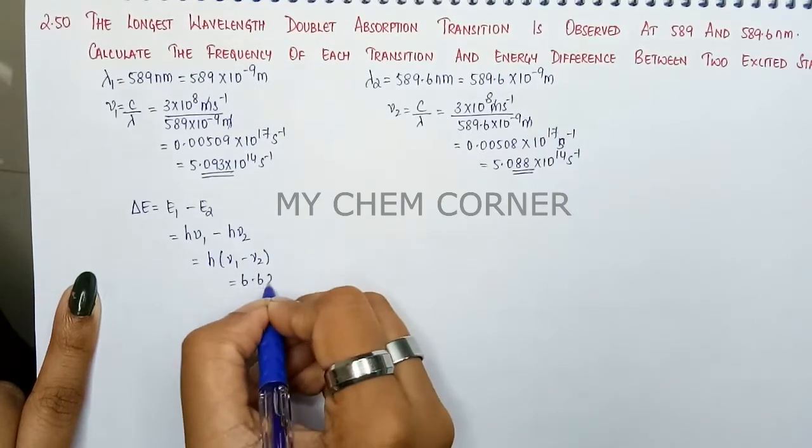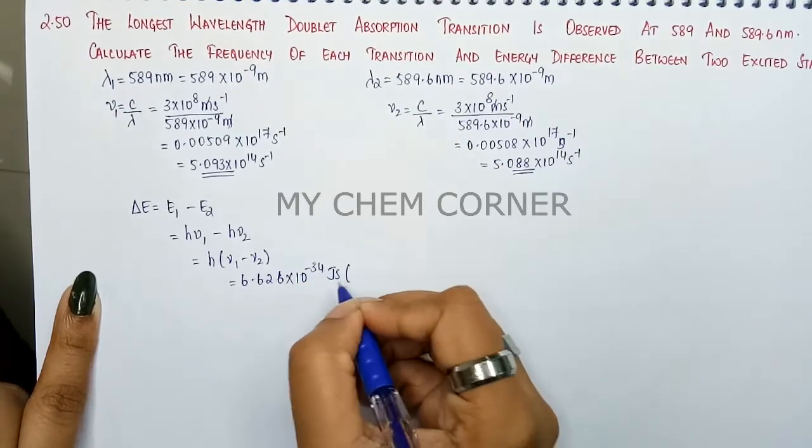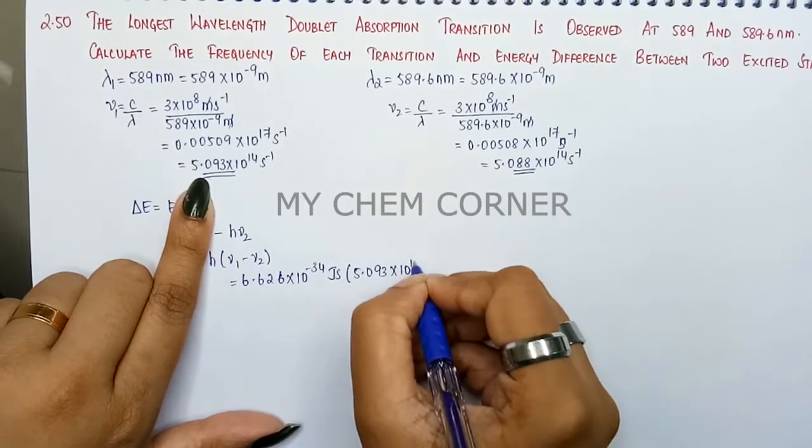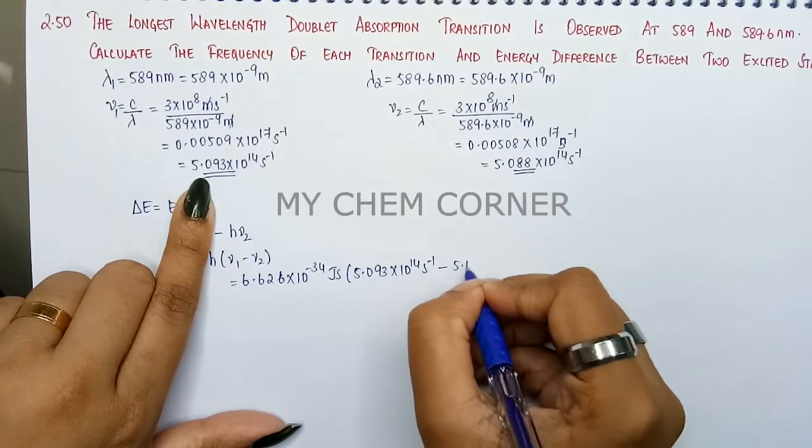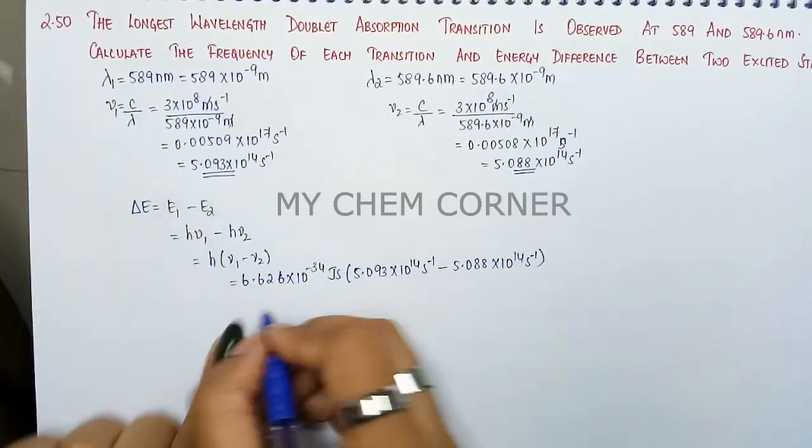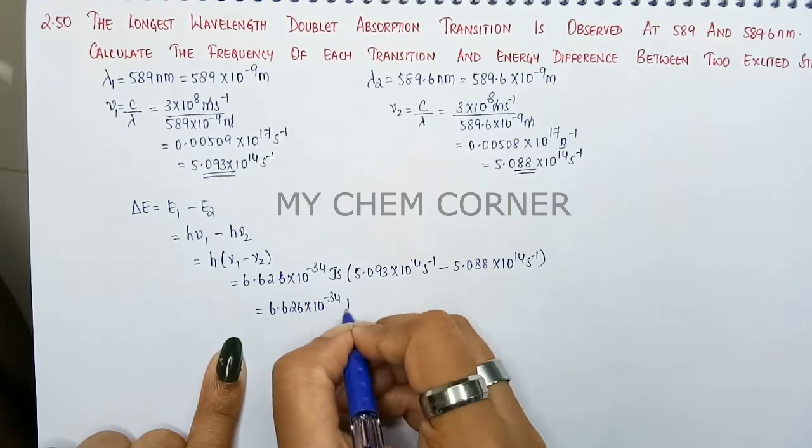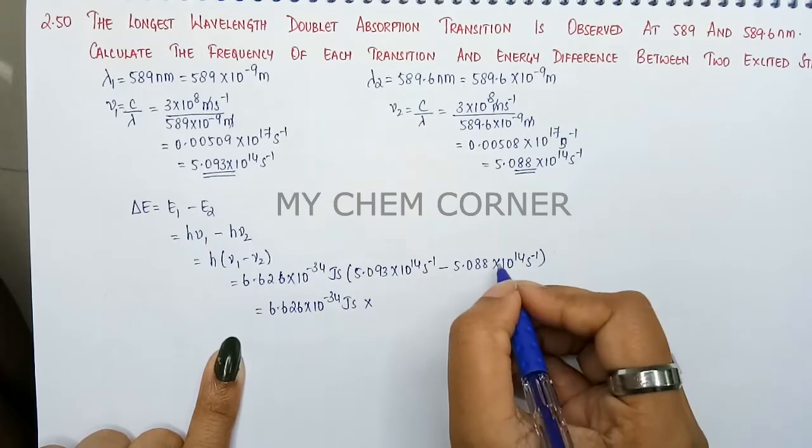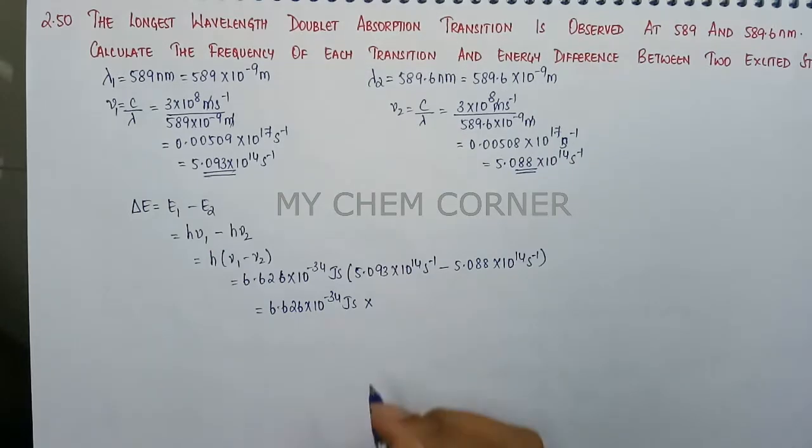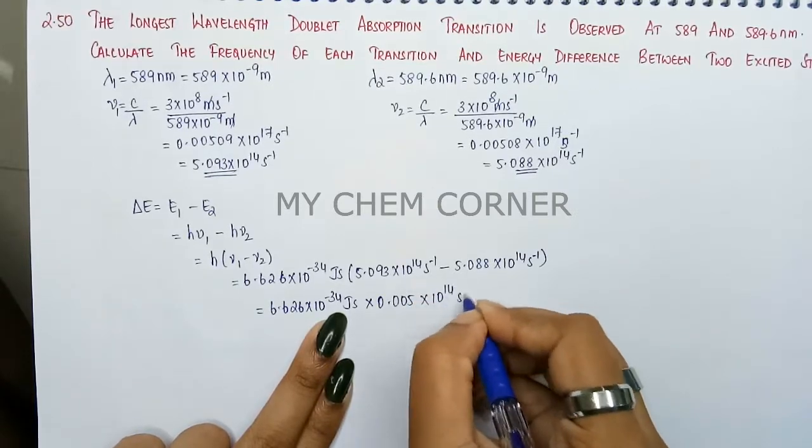H is Planck's constant, 6.626 into 10 to the power minus 34 joule second, into nu one is 5.093 into 10 to the power 14 seconds inverse minus 5.088 into 10 to the power 14 seconds inverse. Simplify the one in the bracket. So that is 6.626 into 10 to the power minus 34 joule per second into this minus this will give your value here as 0.005 into 10 to the power 14 seconds inverse.